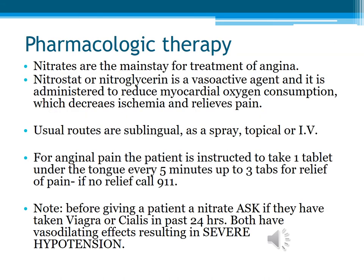Nitroglycerin — or Nitrostat — is given sublingually, under the tongue. It is vasoactive: it decreases myocardial oxygen consumption, which decreases ischemia and therefore relieves pain. It does this by dilating those blood vessels, widening them, decreasing blood pressure, and allowing oxygenated blood to flow more freely. Usual routes include sublingual, spray, topical, and intravenous. If given IV, it is given in a glass bottle and is known as a nitro drip.